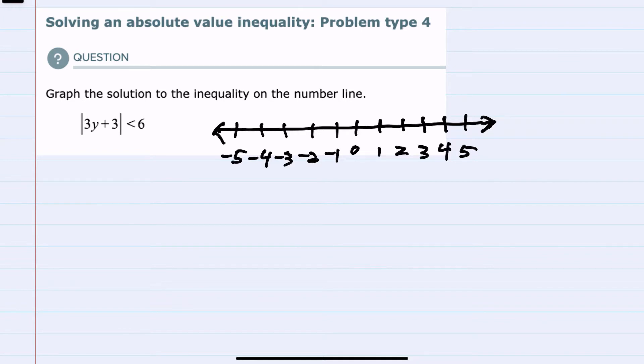Since we're asked to graph it, it's probably safe to assume that we won't have either of the two special situations. The first being where we would have an absolute value less than a negative number. This would be no solution because the absolute value is always positive, therefore it can't be less than a negative.